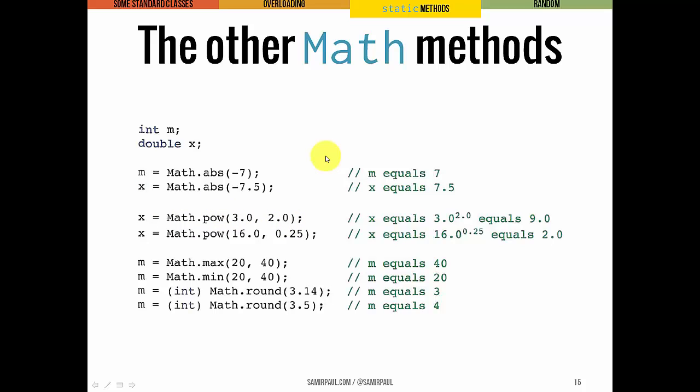It takes two parameters. So in this case, the two arguments that we pass to it are 3.0 and 2.0. And that means we're calculating 3 to the second power, which equals 9. So now that's what's stored in x.